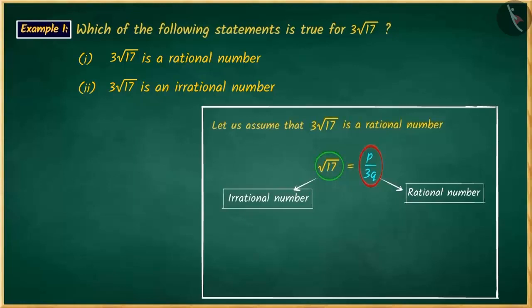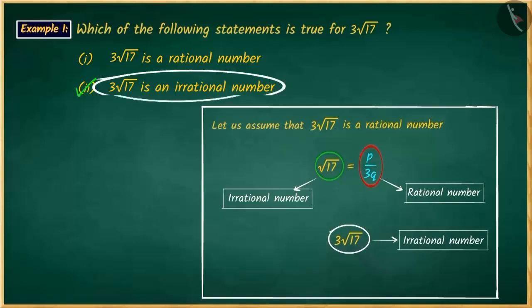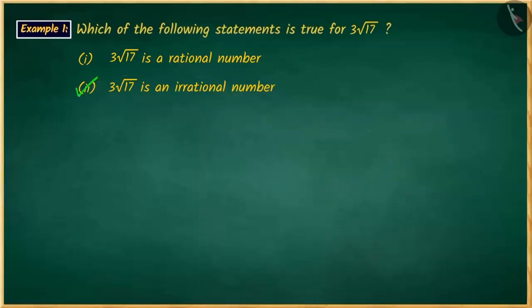This contradiction was caused due to our misconception, because we considered √17 as a rational number. Therefore, 3√17 would also be an irrational number. Hence, option 2 is the correct answer.